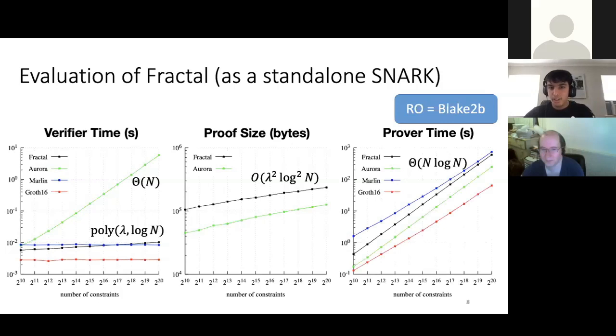And then in prover time, all these grow the same way, like n log n. And the difference between the fastest and slowest snark prover is around a factor of 10. And some of this could even be explained by differences in finite field implementation.